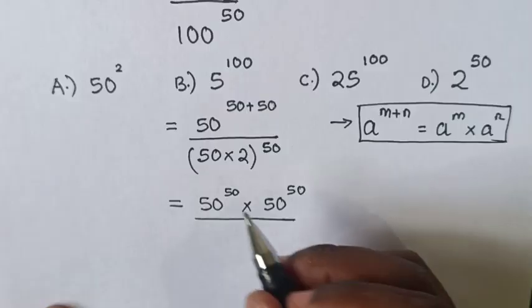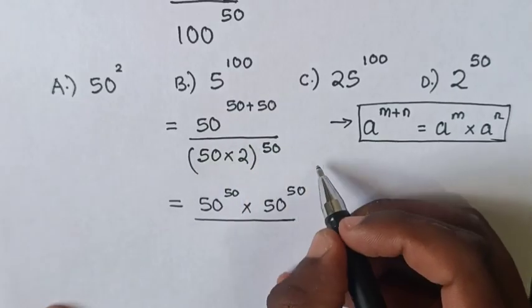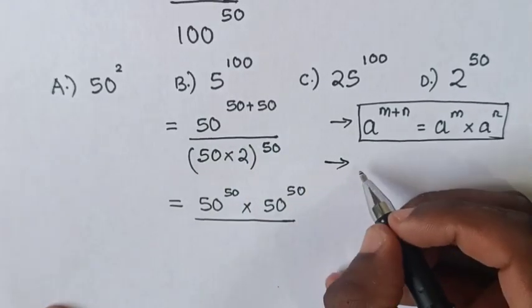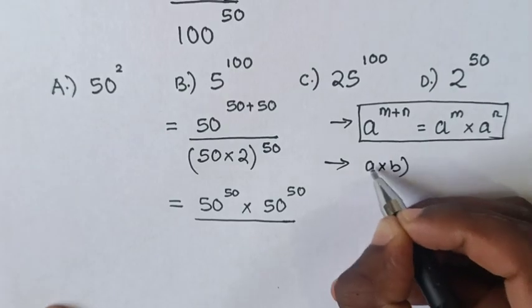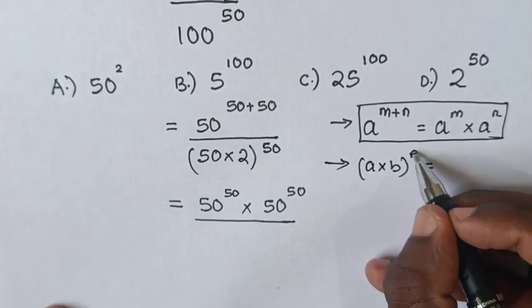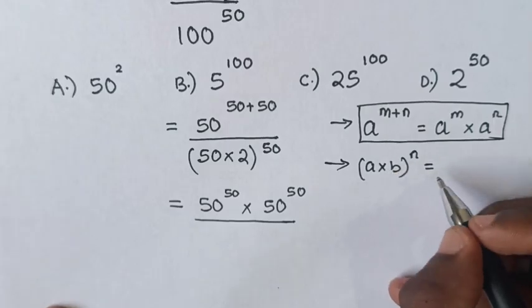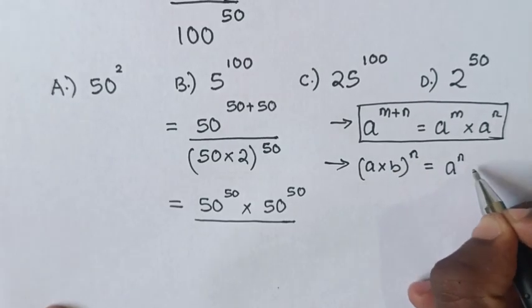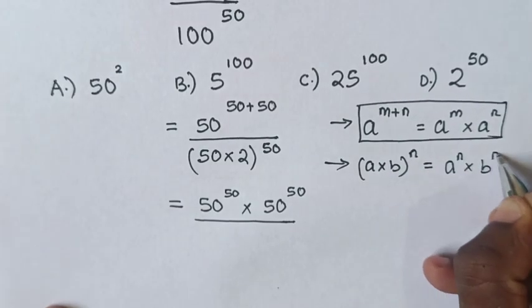In the denominator, we will apply the exponential rule that (A times B)^N equals A^N times B^N, multiplying the power inside the bracket.